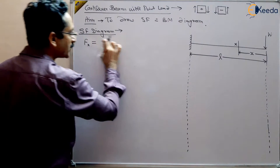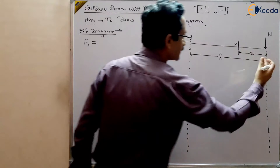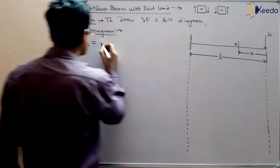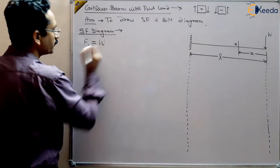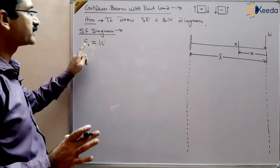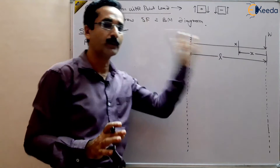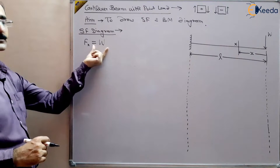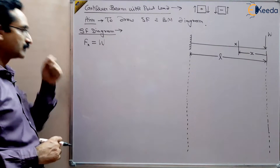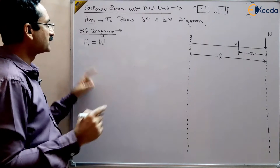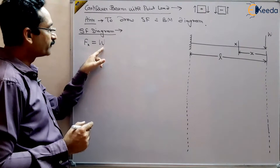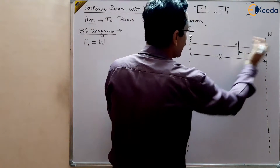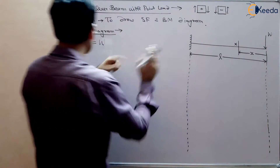FX equals the algebraic sum of all forces to the right of the section, and there is only one force. This is positive according to the sign convention, so FX = W. The shear force at section X is W and this is constant — there is no X term, so it remains constant throughout the entire section.